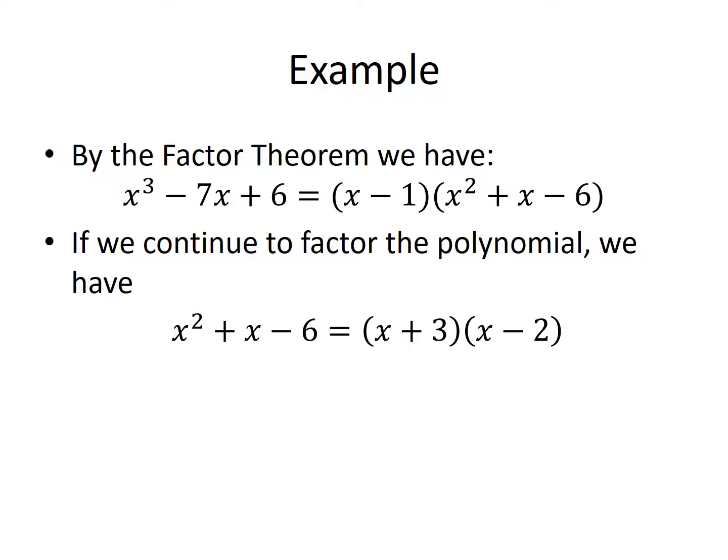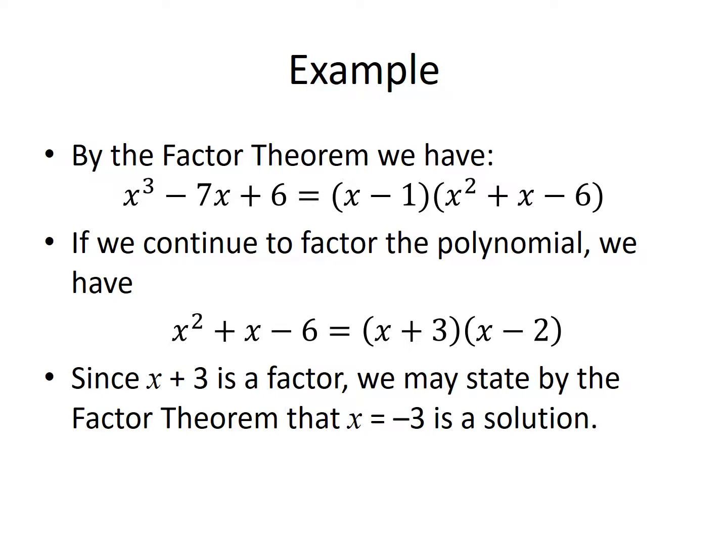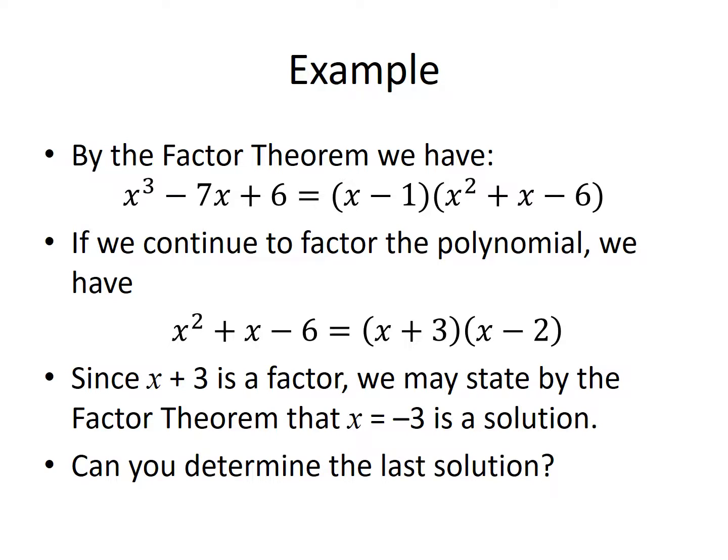By the factor theorem, x cubed minus 7x plus 6 equals x minus 1 times x squared plus x minus 6. If we continue to factor the polynomial, x squared plus x minus 6 can be rewritten as x plus 3 times x minus 2. Since x plus 3 is a factor, we may state by the factor theorem that x equal negative 3 is a solution. Can you determine the last solution?